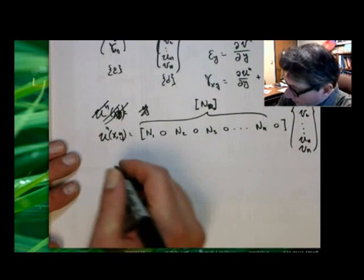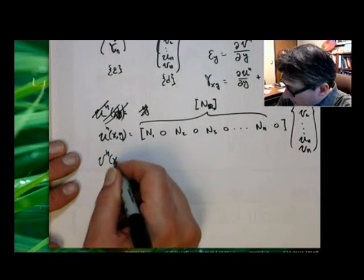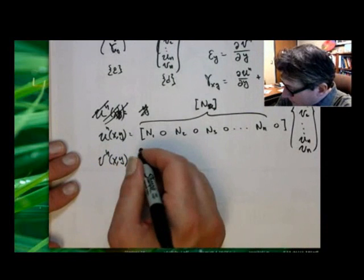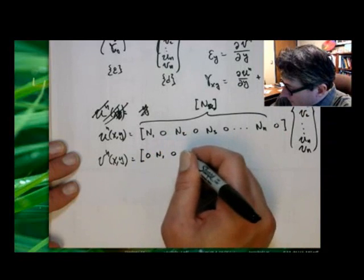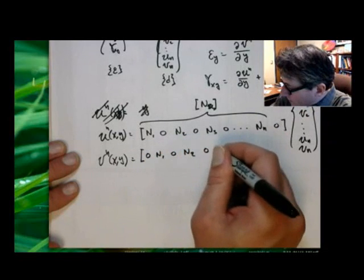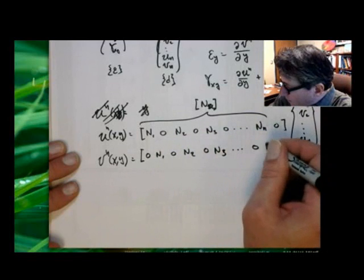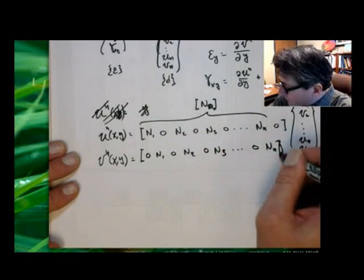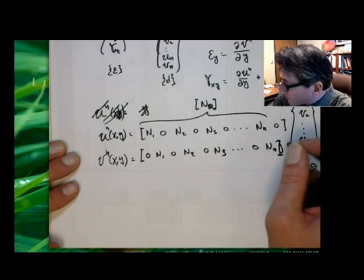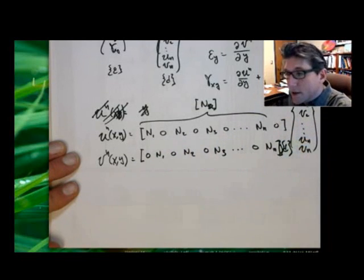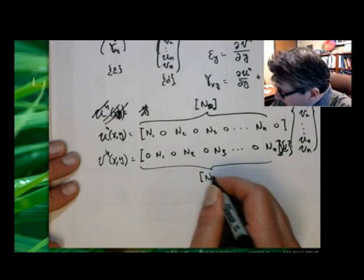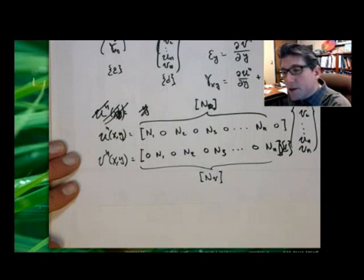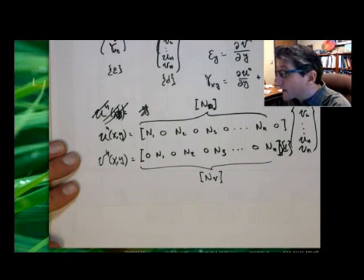Likewise, I can do the same in the Y direction. Since we just want to pick out the V values, it's going to be 0, N1, 0, N2, 0, N3, ..., 0, N — times this same displacement vector D. We're going to call this one NV, because it interpolates the Y displacement.